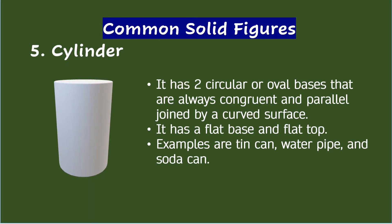5. Cylinder — it is a solid figure that has two circular or oval bases that are always congruent and parallel, joined by a curved surface. A cylinder has a flat base and a flat top. Common examples of cylinder are tin can, water pipe, and soda can.